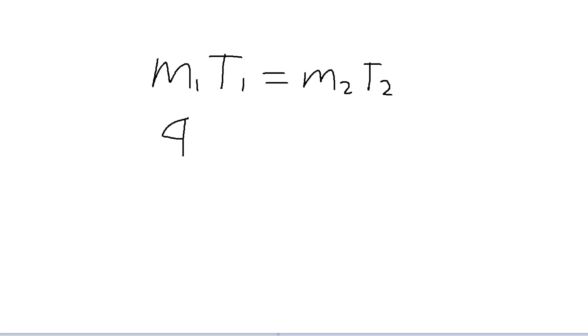Which is 4 times 300, so we change the Celsius into Kelvin here. 27 degrees Celsius means 300 Kelvin. M2 we have to find out and T2 is 400 which has been changed to Kelvin.